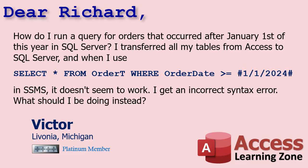Today's question comes from Victor in Livonia, Michigan, one of my Platinum members. Victor says: how do I run a query for orders that occurred after January 1st of this year in SQL Server? I transferred all my tables from Access to SQL Server and when I use that SQL statement in SSMS — the SQL Server Management Studio — it doesn't seem to work. I get an incorrect syntax error. What should I be doing instead?